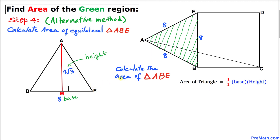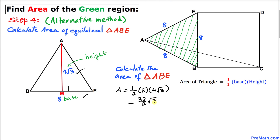Now let's calculate the area of triangle ABE using Area = ½ × base × height. Our base is 8 and our height is 4√3. So area = ½ × 8 × 4√3 = 32/2 × √3 = 16√3 square units. This confirms our earlier result.